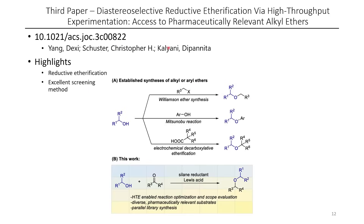The third paper for today is another etherification paper where, instead of taking an ester and converting it to an ether, we take an alcohol as well as a ketone or aldehyde, and in the presence of a Lewis acid with a silane reductant, we're afforded with ethers. The traditional ways to do this don't work too well, or they're really limited in terms of scope. And there's a lot of scope in this paper — they do a lot of library screening just to really show that this is potentially applicable to a lot of substrates.